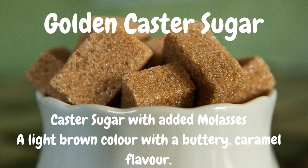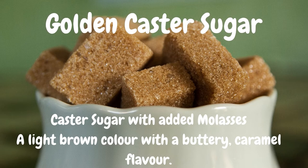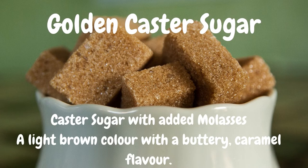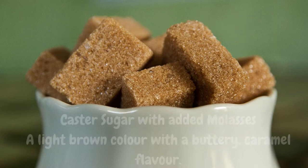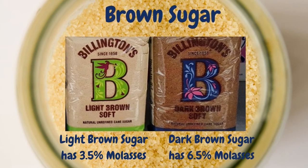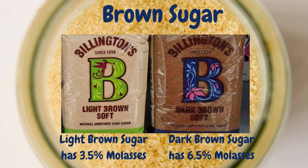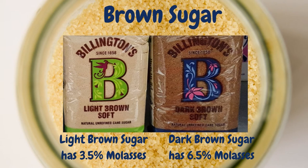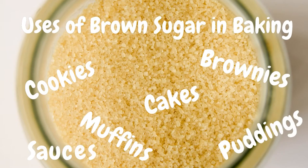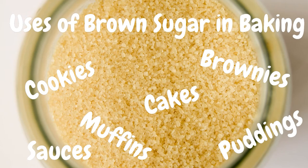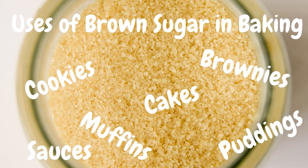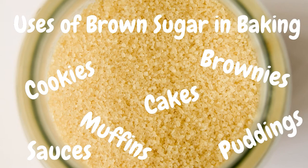You might also find golden caster sugar, which is caster sugar but with added molasses, giving it its characteristic brown colour. This can be used interchangeably with caster sugar. Now on to brown sugar — brown sugar is white sugar with molasses added to it, and you can have a light or dark version depending on how much molasses is added. There are lots of uses for brown sugar in baking. In my kitchen, I use it to make cookies, muffins, brownies, pudding, and it's also really good in making sauces.